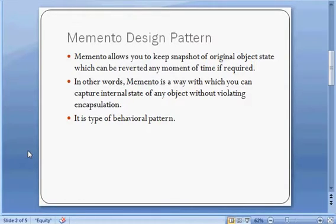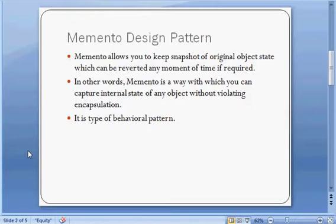The second approach is: initially when you get the values from the source, you keep one more copy of the same values in the same class object. Whenever the person asks for cancelling the changes, you just replace the values from the original copy of the object. With this you can have the original state of the object available throughout the whole processing. This is what the Memento design pattern is. It allows you to keep a snapshot of the original object state which can be reverted at any moment if required. In other words, Memento is a way to capture the internal state of an object without violating encapsulation.